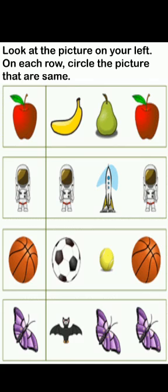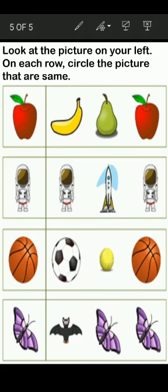For example, on the left side it's an apple, and we have to find the apple on the right side. Is this apple? No, this is a banana. Is this apple? No, this is a pear. Yes, this is apple — you have to find it like this. Got it, everyone? Jazakallah, Allah Hafiz!